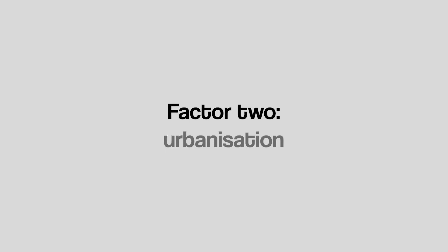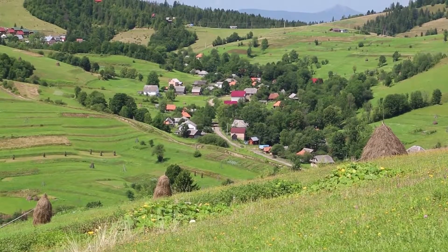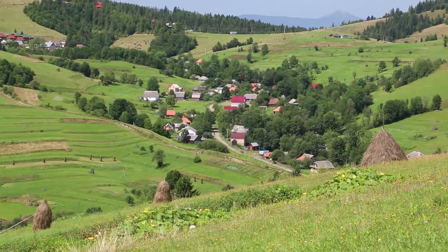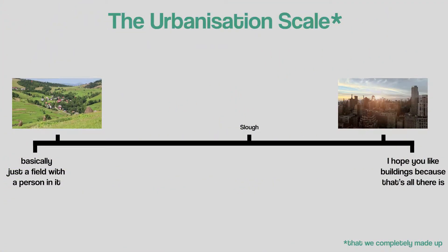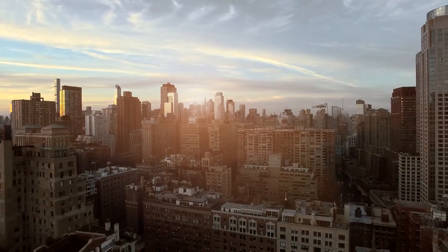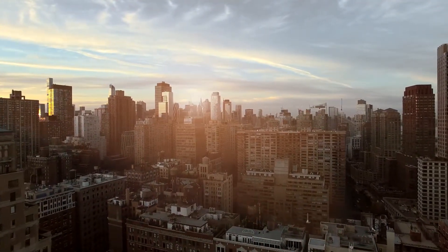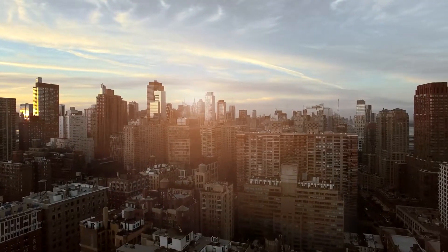Next up is urbanisation, which means how built up a place is. Take a look at this village — there isn't much here, so we would say it isn't very urbanised. On the flip side, a huge city like New York has buildings, roads, power, water and much more. So we would say this is a very urbanised place.